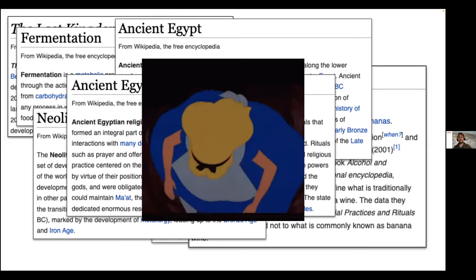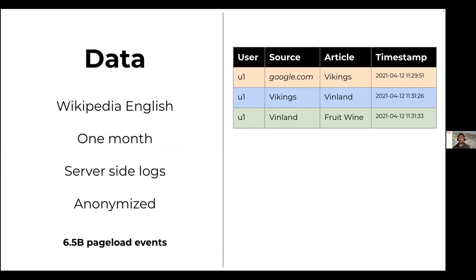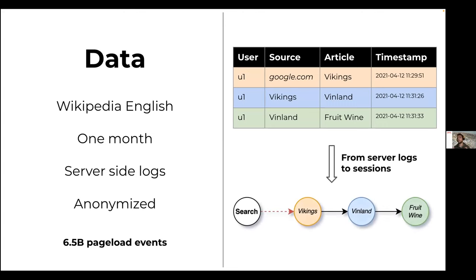The name is of course a reference to the novel 'Alice's Adventures in Wonderland.' This is a behavior well known in popular culture, but what we know is based only on anecdotal reports. In this study we characterize these wiki rabbit holes in a data-driven way by investigating the digital traces left on the server by readers. To support our analysis, we collected one month of server logs of the entire English Wikipedia — in total more than 6.5 billion page load events — carefully anonymized. Thanks to the HTTP referral field, we transformed these logs into navigation sessions that connect sequential clicks of the same user.